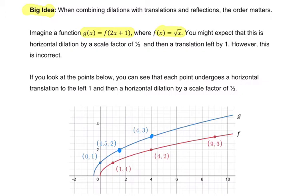f of x equals the square root of x in this case. And I'm telling you here that you might expect it to be a dilation first by a scale factor of a half and then a translation left by 1, but that's incorrect. This is not the correct way to transform.